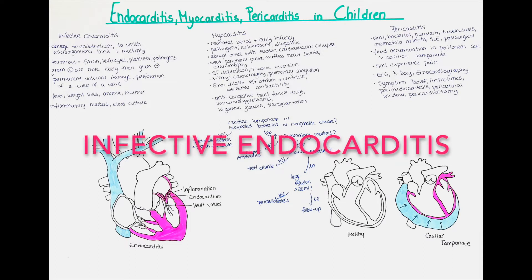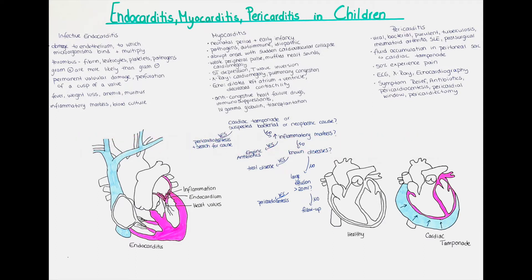We will talk about infective endocarditis. As the name suggests it affects the endocardium, to be more specific the valvular and/or parietal myocardium. Usually a clot or thrombus called vegetation is formed which damages the cardiac tissue and/or the valves. It is relatively uncommon in children but has a significant morbidity and mortality, so a rapid diagnosis and initiation of treatment are important.